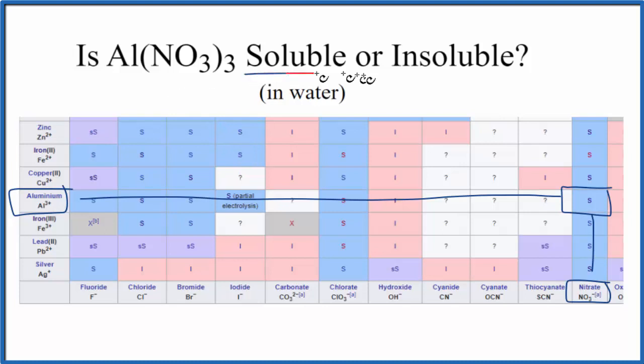So in answer to our question, aluminum nitrate is soluble in water. This is Dr. B, and thanks for watching.